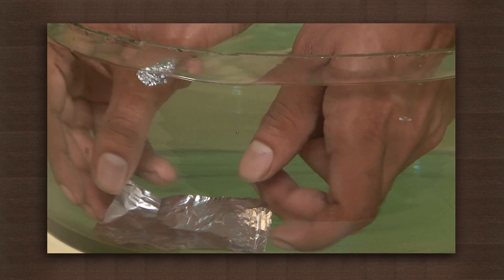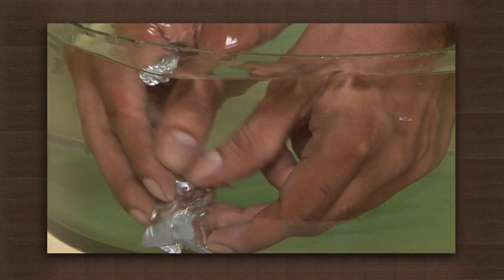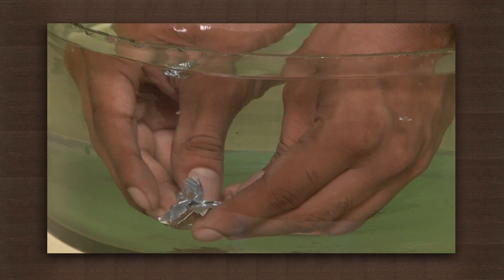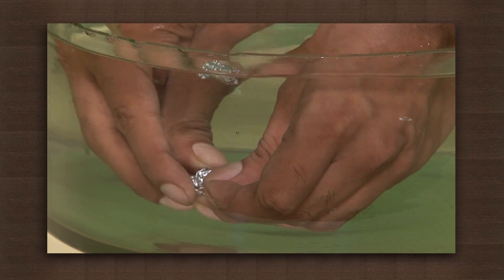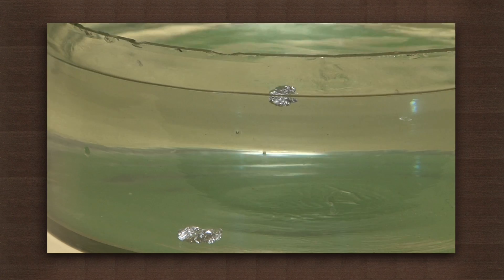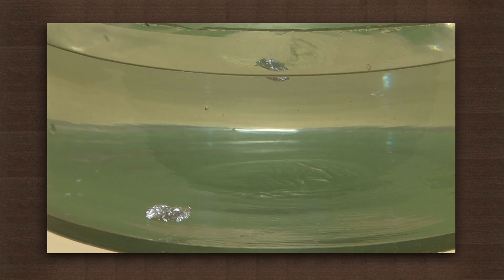Now crumple the foil which is already sunk in water. Instead of rising to the surface, it sinks down even though it is crumpled.